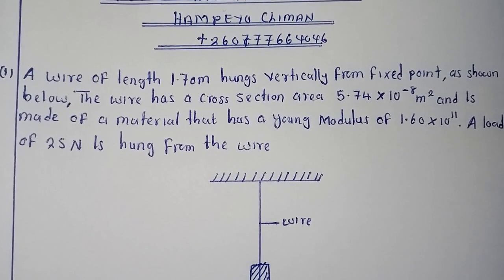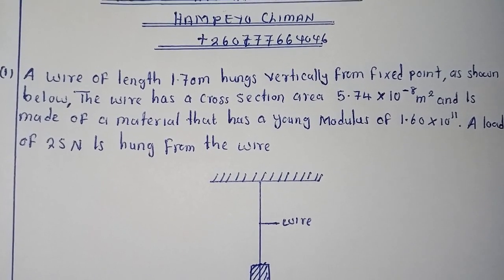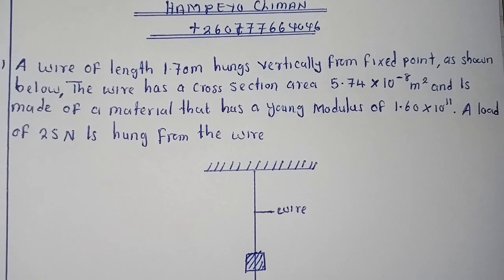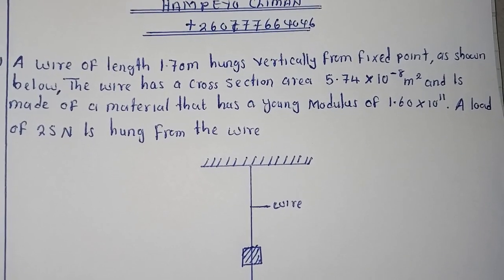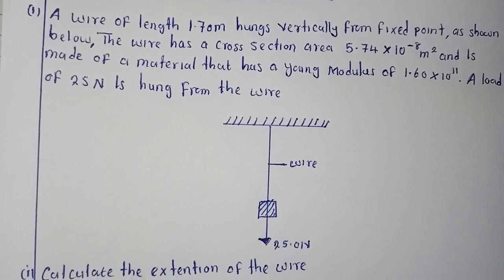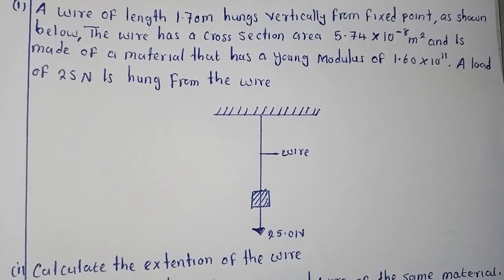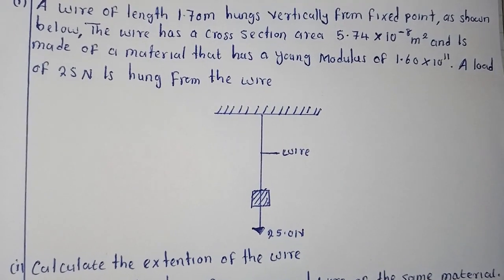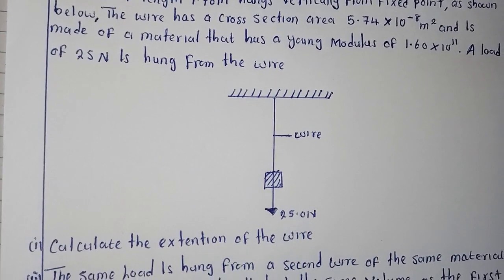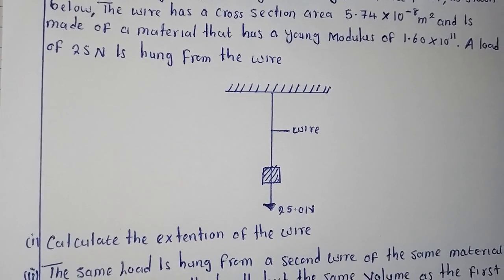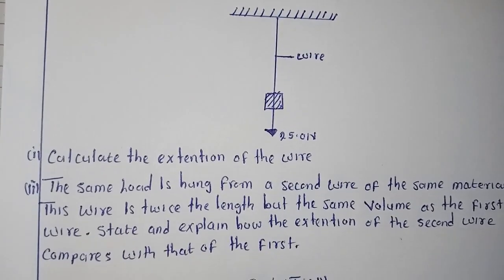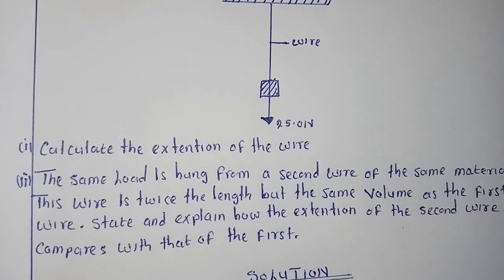The question says: a wire of length 1.0 meters hangs vertically from a fixed point as shown below. The wire has a cross-sectional area of that figure and is made of a material that has a Young's modulus of 1.6 times 10 to the power 11. When a load of 25 Newtons is hung from the wire, calculate the extension of the wire.